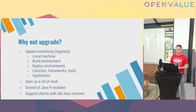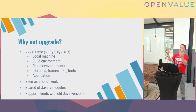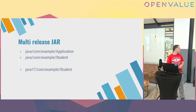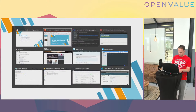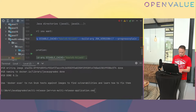Another case: some software has to run on-premise at a customer, maybe in their AWS cloud, where only an old version of Java is running. There's a nice workaround called the multi-release JAR, which has been in Java for a while but is relatively unknown. Here you can see two Student classes — one in the normal java/com folder structure and one in the java17/com folder structure. Let's look at it in an IDE.